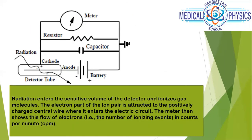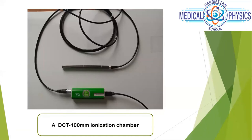Here is an IBA ion chamber — a DCT 100 mm ion chamber. The sensitive volume is the length along the chamber. This is quite expensive and we use it for dose measurements — for example, CTDI measurements. You want to get your dose output using your 16 cm and 32 cm phantoms, measuring at 12 o'clock, 3 o'clock, 6 o'clock, and 9 o'clock positions.